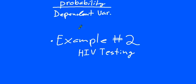Now we're going to start our second example of dependent variable probability. This example is going to be about HIV testing, and we're going to talk a little more generally about medical testing, because that's actually a pretty important topic, and you might be surprised by some of the results.